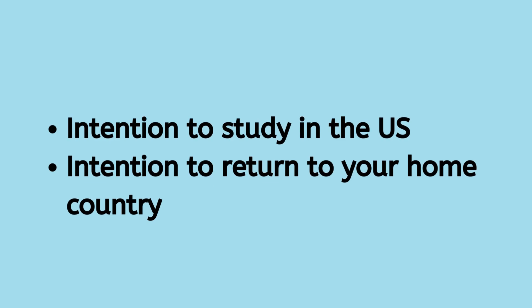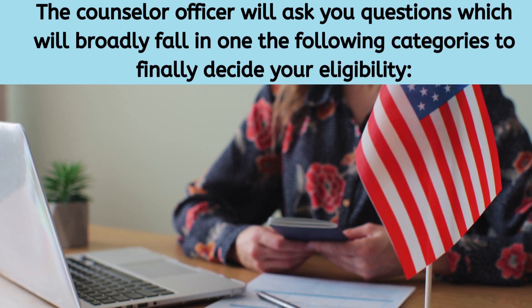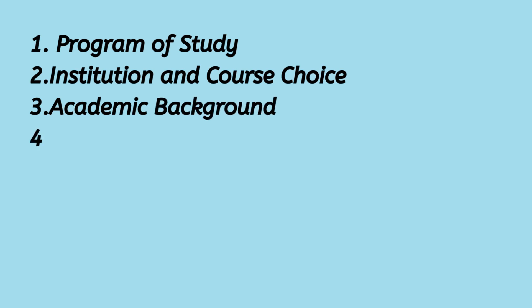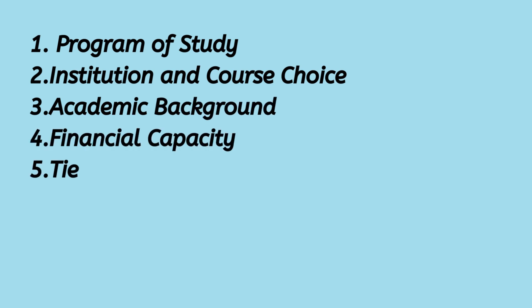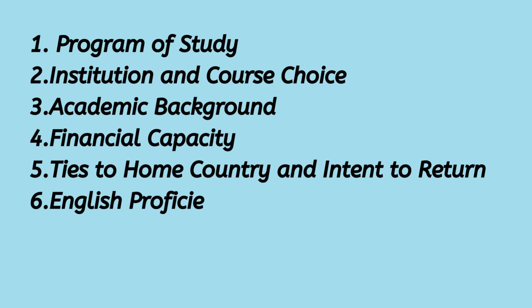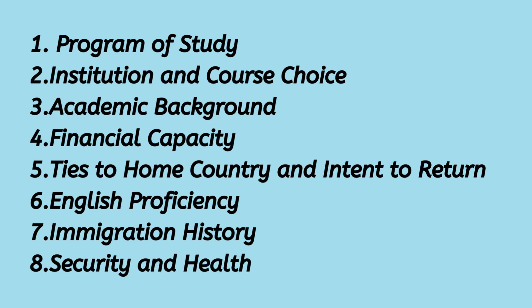And number two, your intent to return back to your home country after your studies. In order to ascertain this, the counsellor officer will ask you a few questions which will broadly fall in one of these categories: number one, program of study; number two, institution and course choices; number three, your academic background; number four, your financial capacity; number five, your ties to home country and your intent to return; number six, your English proficiency; number seven, your immigration history; number eight, security and health. They use these parameters to finally decide your eligibility.